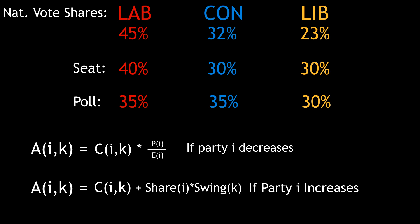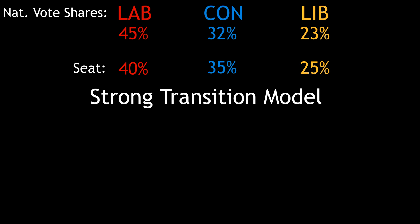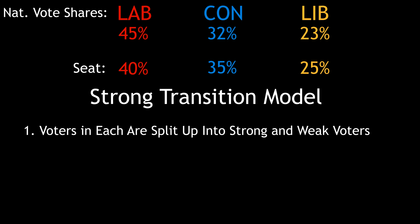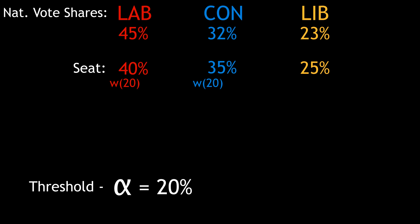The strong transition model builds on this, adding an extra layer of sophistication. In our example election, Labour has a vote share of 45%, the Conservatives 32%, and the Lib Dems 23%. In a particular seat, Labour have 40%, the Conservatives 35%, and the Lib Dems 25%. The STM adds two new principles: firstly, a party's vote share in each seat is split into strong and weak voters. Secondly, all of a party's weak voters will defect before any of the strong voters. We set a threshold — say around 20%. If a party's vote share in a seat exceeds 20%, the remainder is made up of strong voters. In this seat, the Conservatives have 20% weak voters and 15% strong voters, the Lib Dems have 20% weak and 5% strong, and Labour have 20% weak and 25% strong voters.